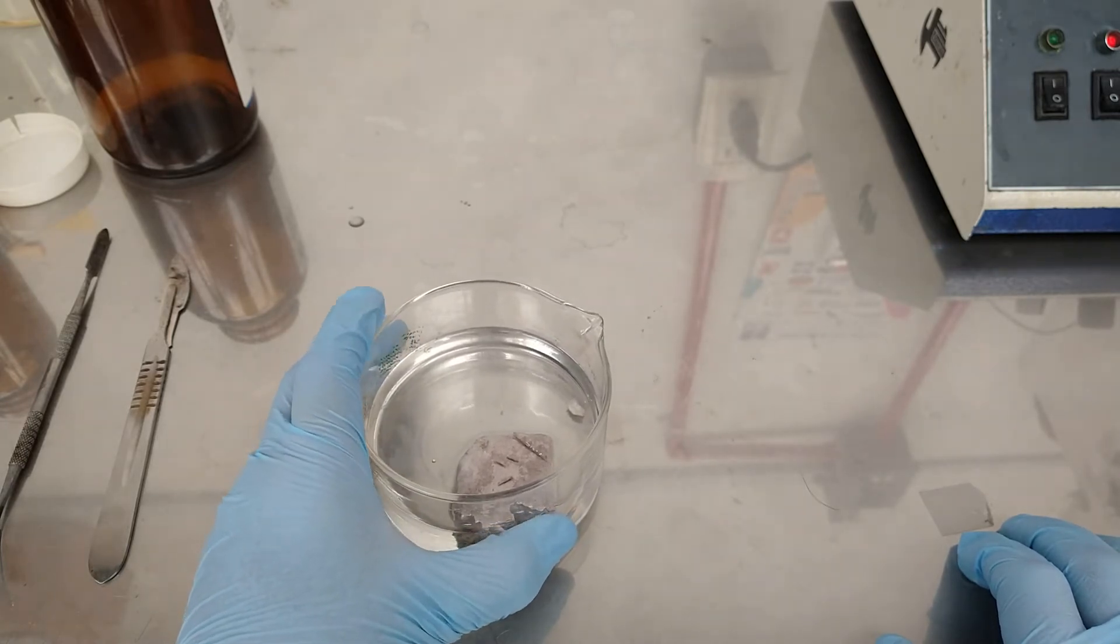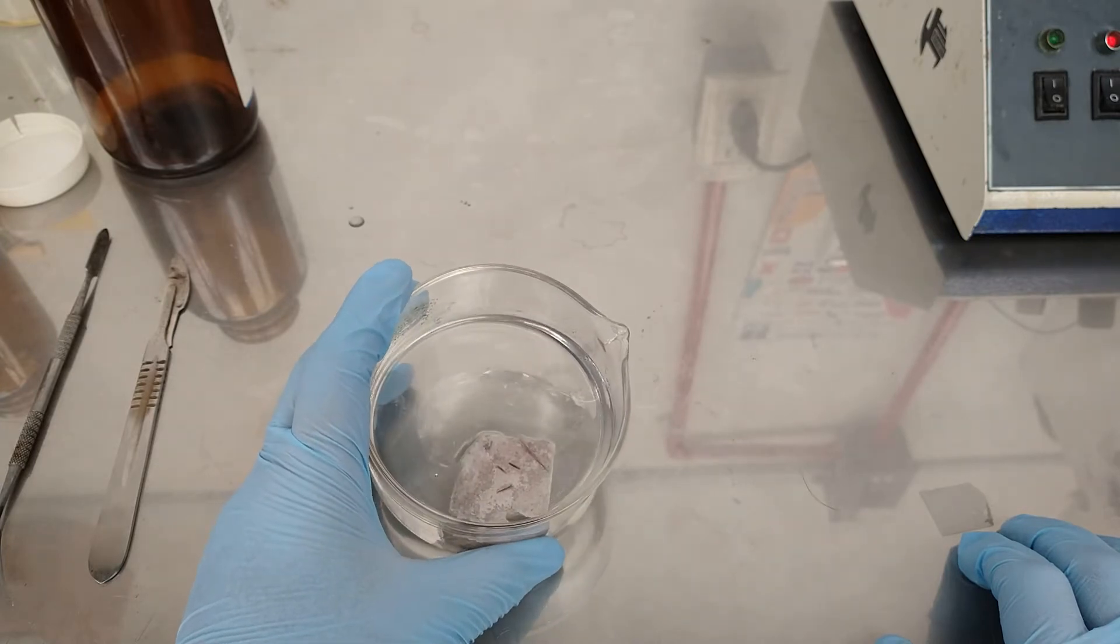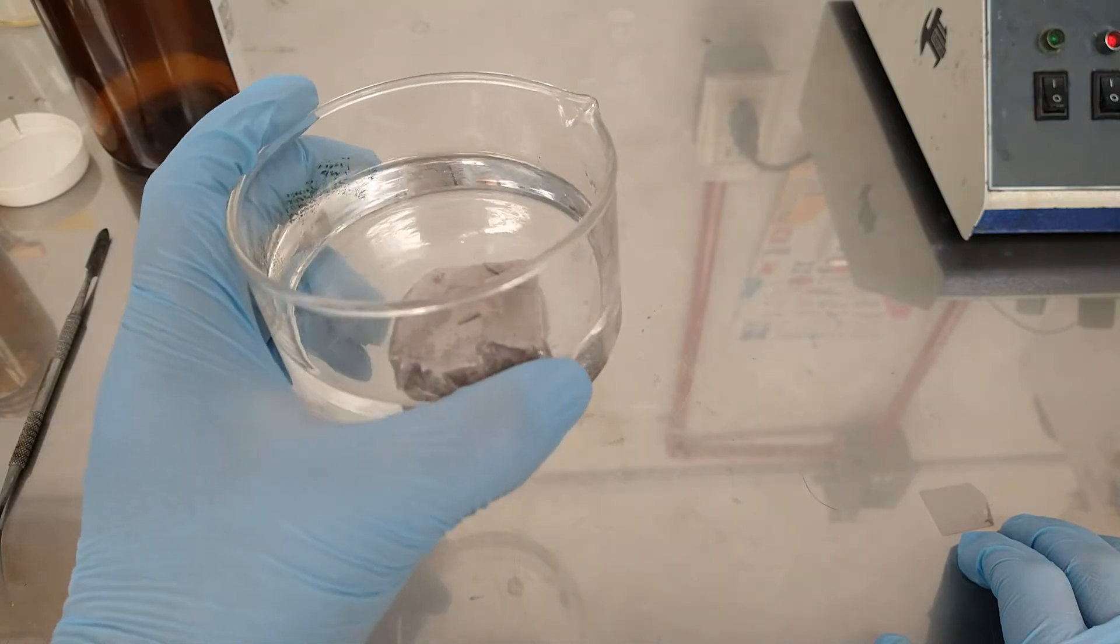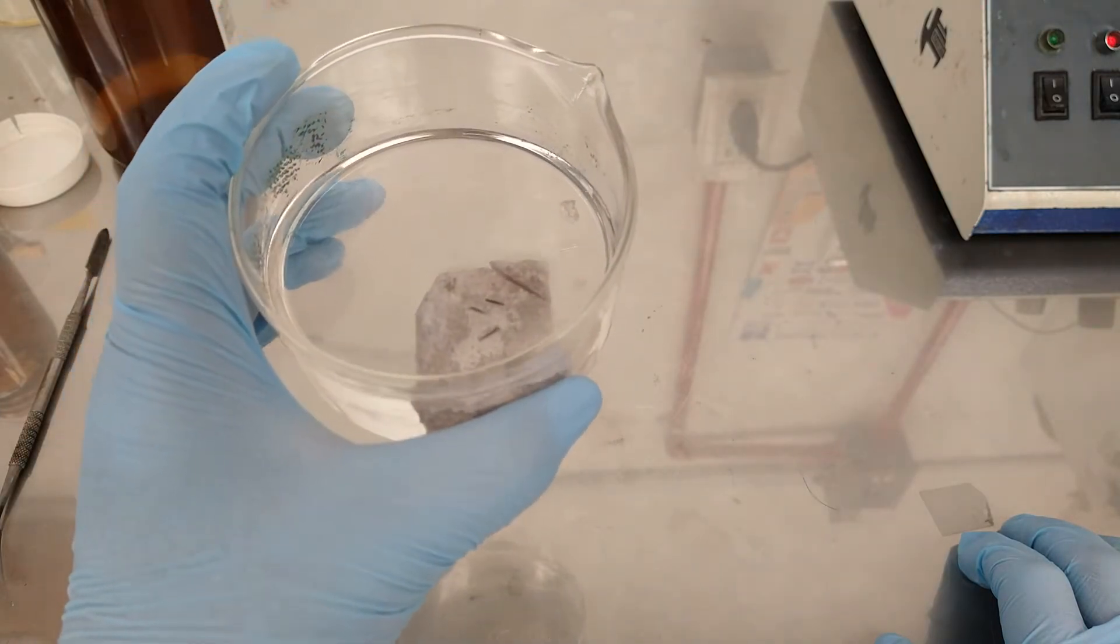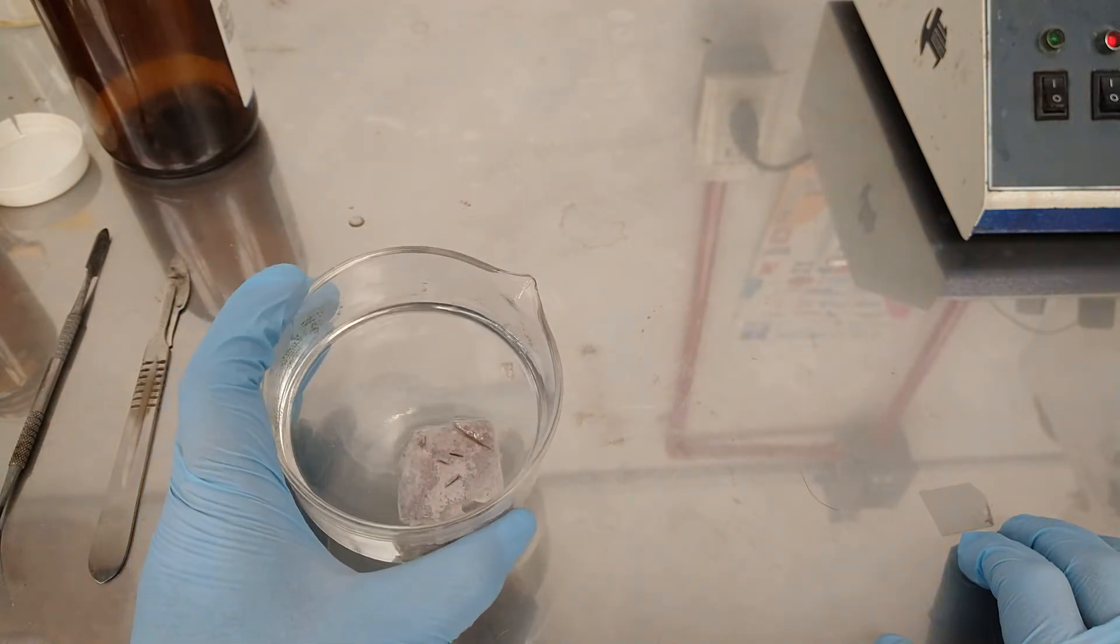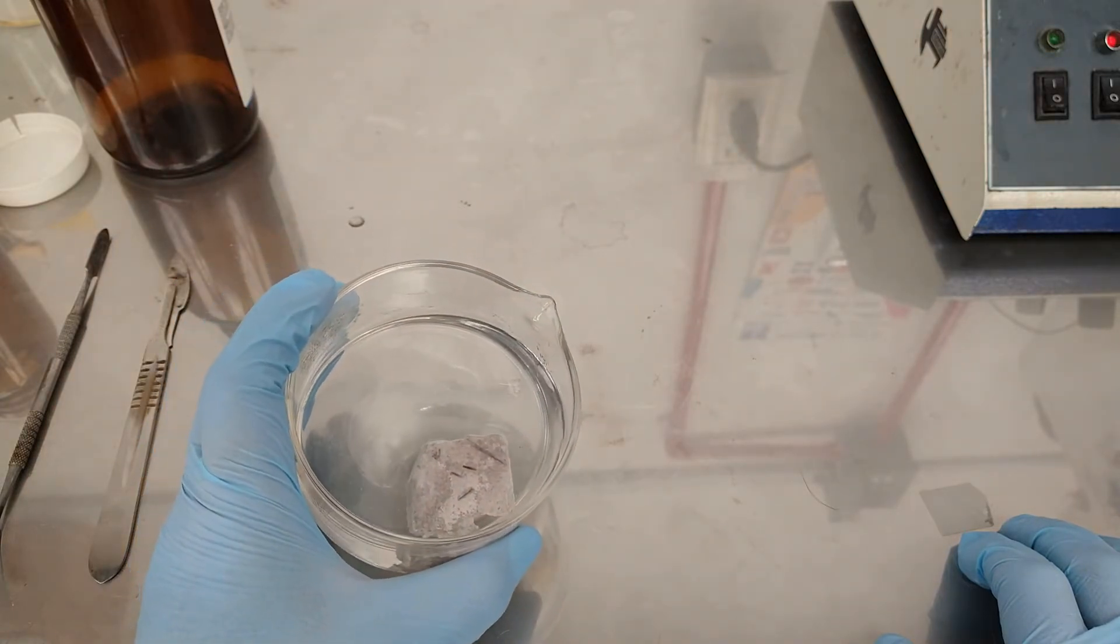For this reaction we need some sodium metal that is a little bit dirty, so we have to clean it first. We cut it and then clean it by melting it into hot mineral oil.